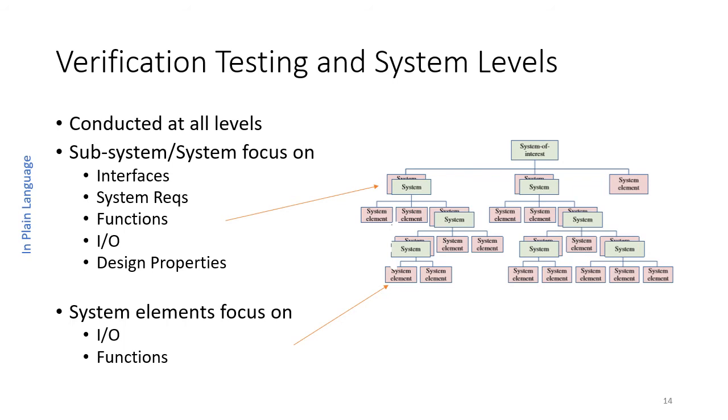People always ask: do we have to wait until the final system is integrated before we can do verification? The answer is no, most definitely not. You want to start with the very lowest level system elements and verify each individual one. As they get verified, you'll integrate them to the subsystems and eventually the systems and perform verification testing on each level. At the lowest level, the system elements, your verification testing is on input outputs and the functional. Once you start integrating systems, now you're going to test the interfaces between the systems as well as the system requirements, the functions, I/O, and the design properties. Verification testing is done as the subsystems are integrated, and the type of verification test changes because obviously you can't test the interfaces between subsystems until you have multiple system elements joined together to form a subsystem.